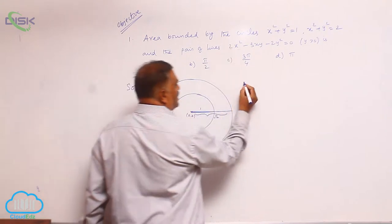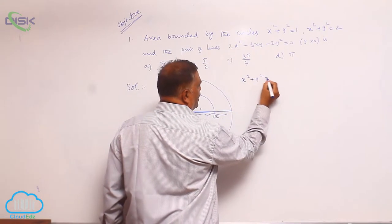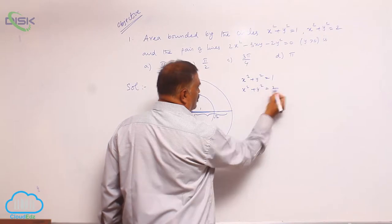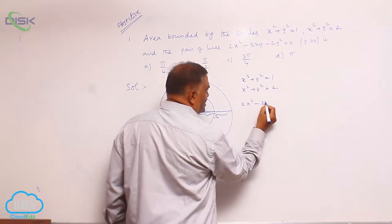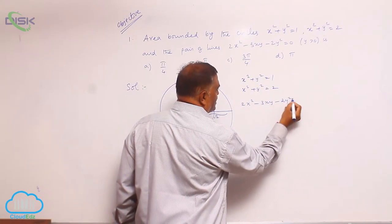One more point is given: x square plus y square equal to 1, x square plus y square equal to 2, 2x square minus 3xy minus 2y square equal to 0.